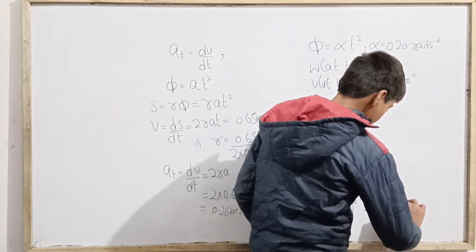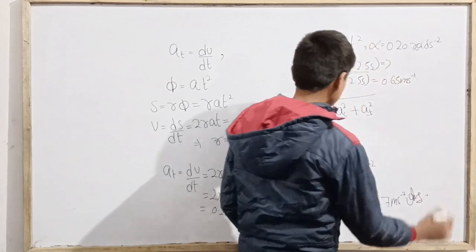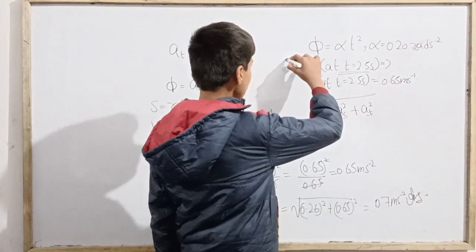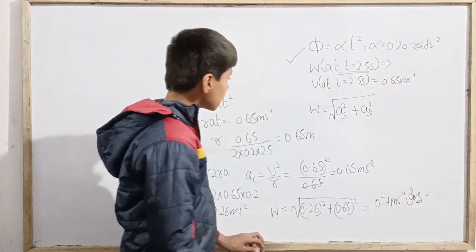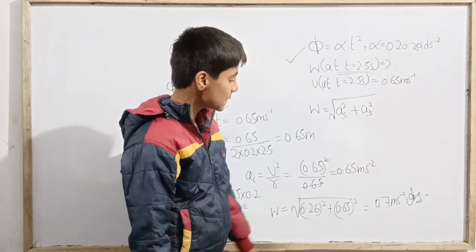But if we just approximate, this is approximately 0.7 meter per second squared. That is just a rather approximation. So total acceleration at t equals 2.5 seconds.